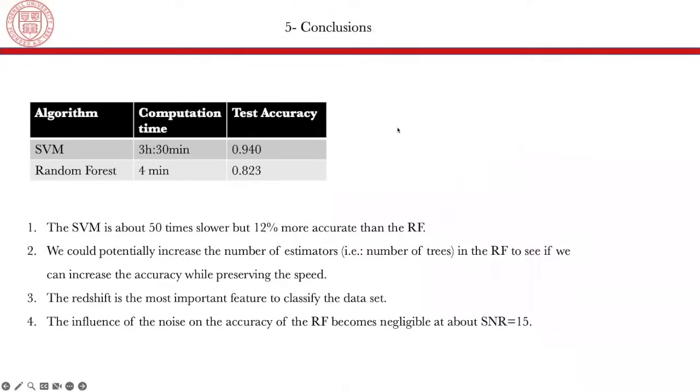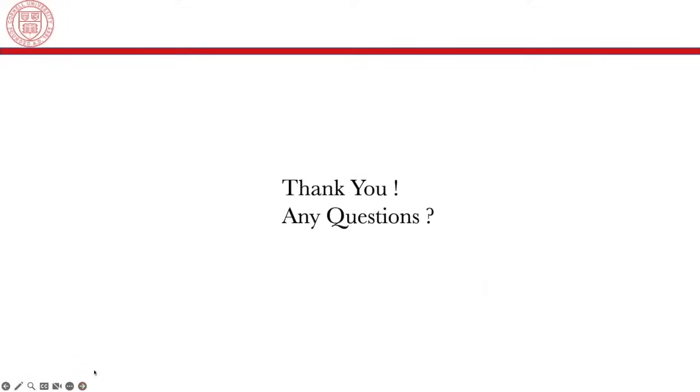Finally, here are some conclusions. The SVM is about 50 times slower, but 12% more accurate than the random forest. Second, we could potentially increase the number of estimators, which is the number of trees used in the random forest to see if we can increase the accuracy while still preserving the speed. The third point is that the redshift is the most important feature to classify the data sets. And finally, we have seen that the influence of the noise on the accuracy of the random forest becomes negligible at about a signal-to-noise ratio equals to 15. Thank you for your attention.